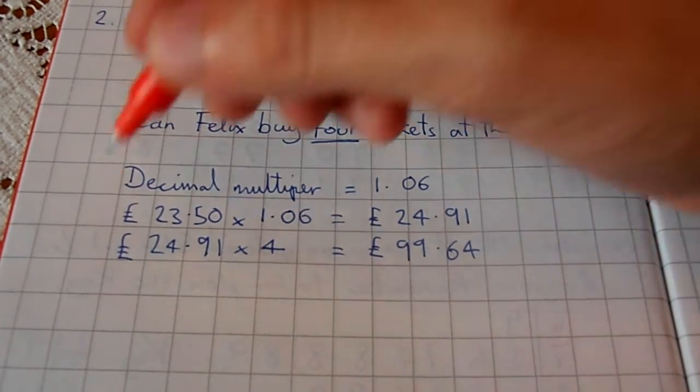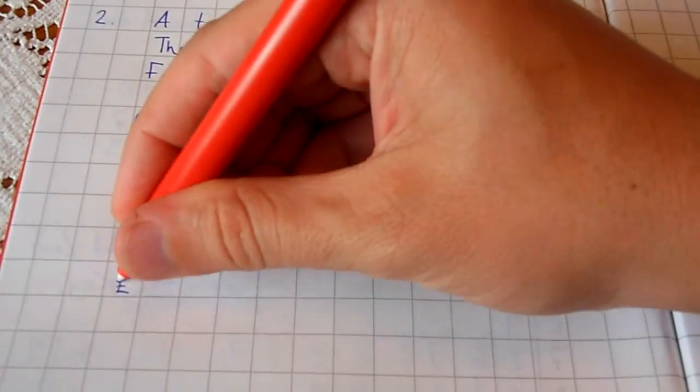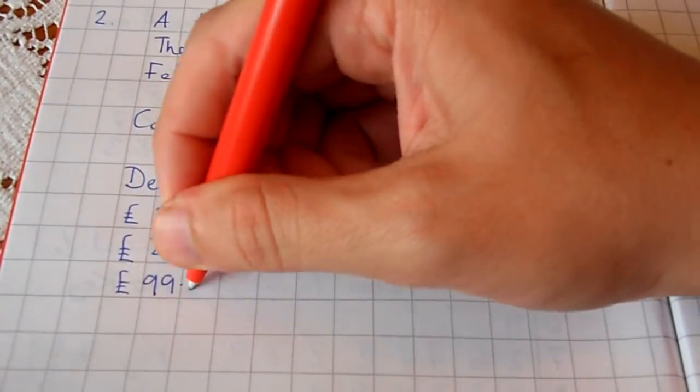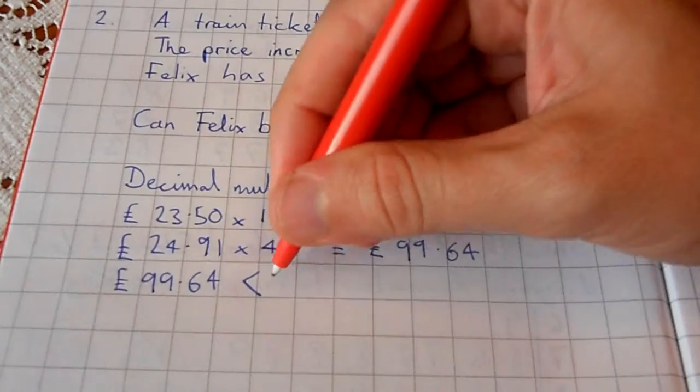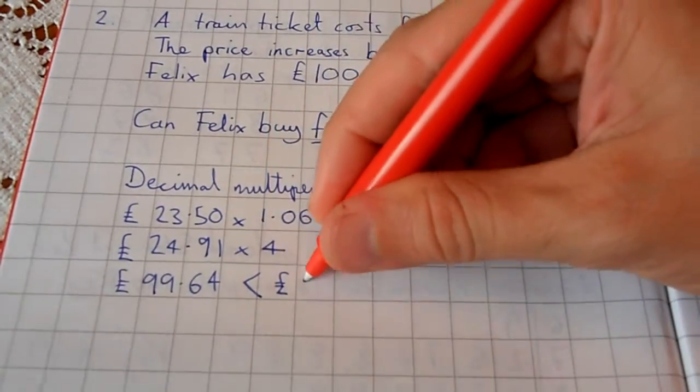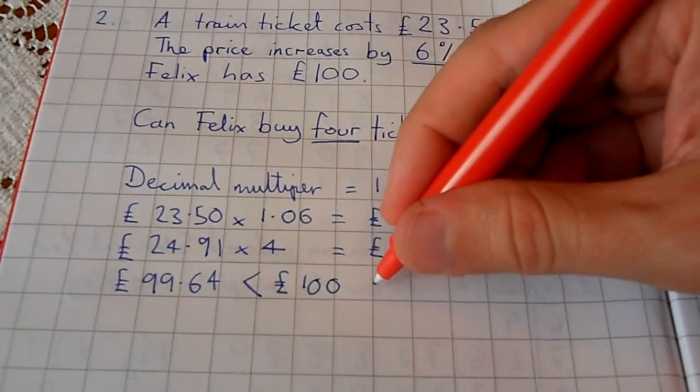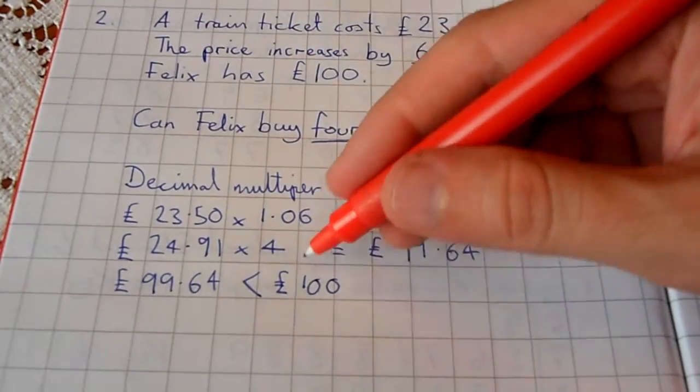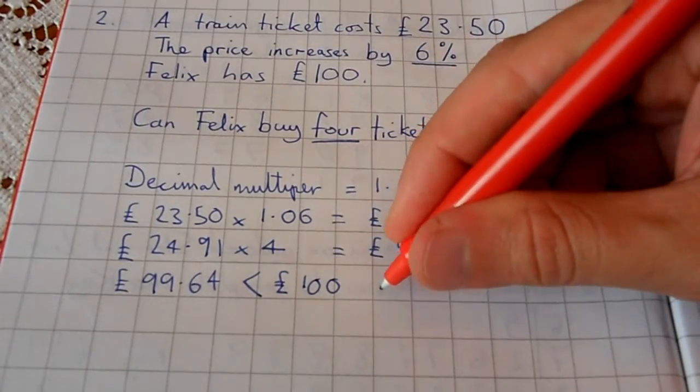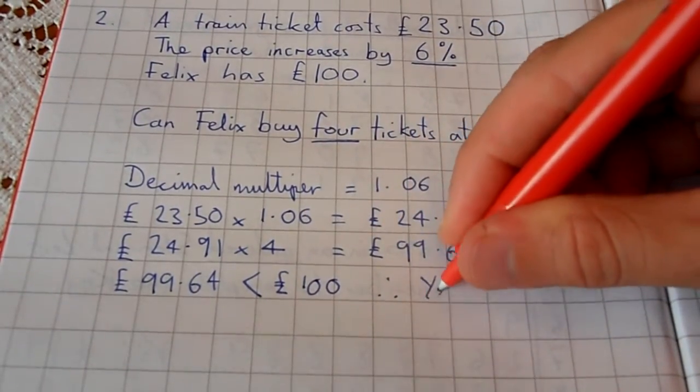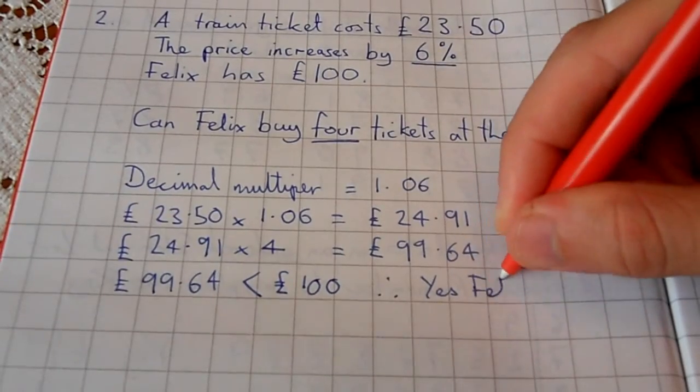He can afford it because £99.64 is less than £100. But to make it complete, it's always good to write a statement using mathematical symbols: £99.64 < £100, so therefore yes, Felix can buy four tickets at the new price.